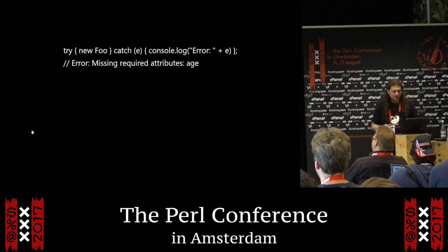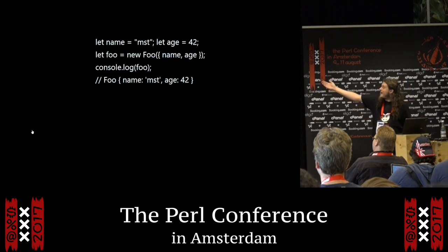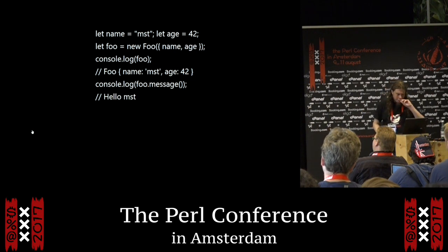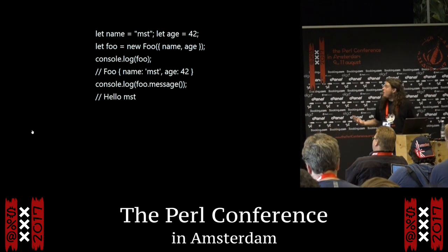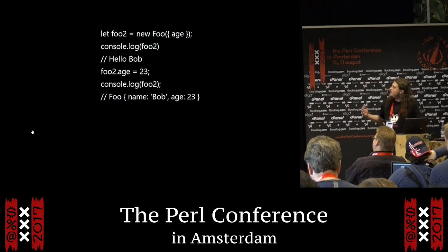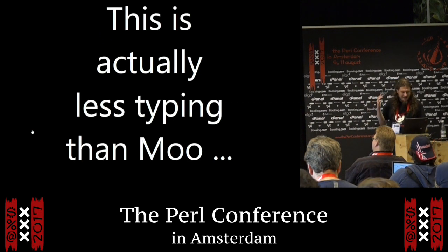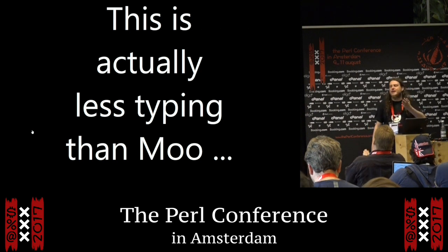If we call the constructor without a required attribute, we get a throw. If we call it with the actual attributes, we get something sensible out in the object. Calling the method on it produces the sensible result. If you create another one, notice we can modify the read-write attribute directly, because this is JavaScript. And this is actually less typing than Moo, which clearly means I should release a Moo extension that provides `ro` and `rw` subroutines.